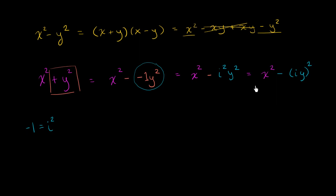And just like that, using i, I've been able to write this sum of squares as a difference of squares. And now we can factor it just the exact same way that we factored this original expression. This thing is going to be equal to,